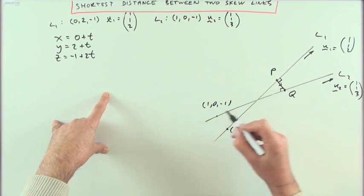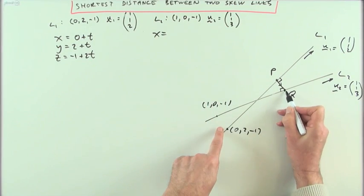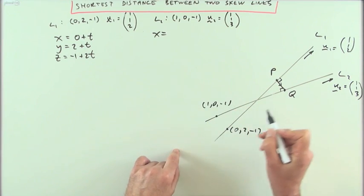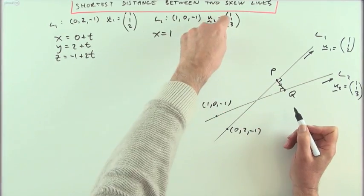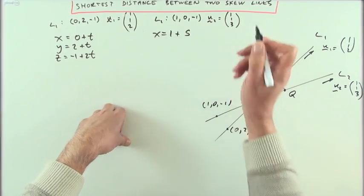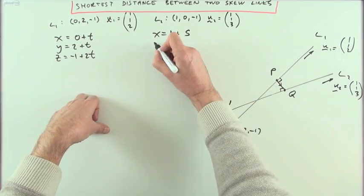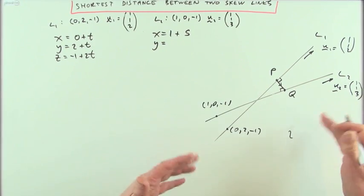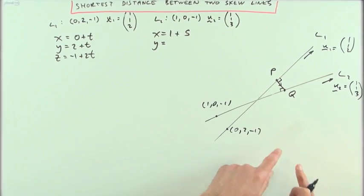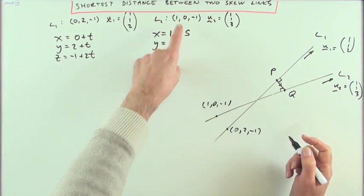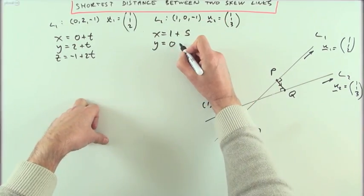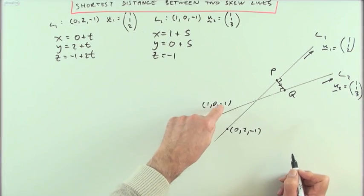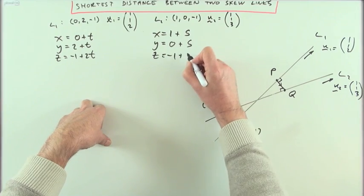Similarly for point Q on line two: the x-coordinate is found by starting at 1 and taking steps of length 1, using a different parameter S. So the x-coordinate of Q is 1 + S. The y-coordinate starts at 0 and takes one step, so it's S. The z-coordinate starts at -1 and takes steps of 3, so it's 3S - 1.